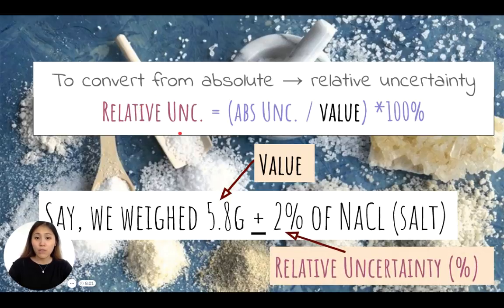So knowing the relative and the value, we can plug it into the previous equation and isolate absolute uncertainty onto one side to solve for the absolute.